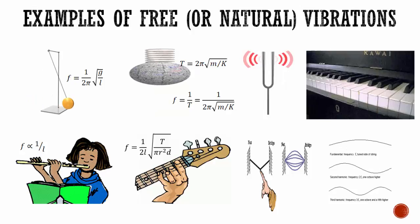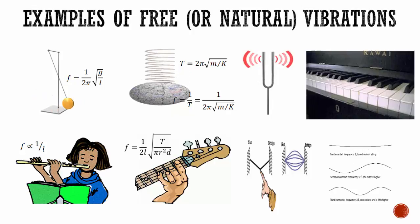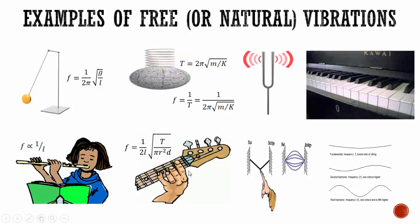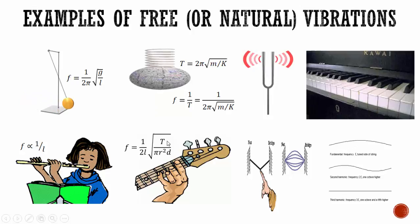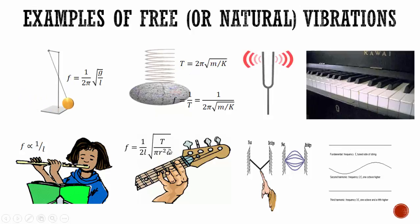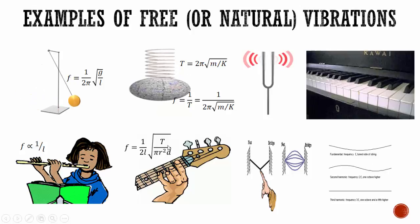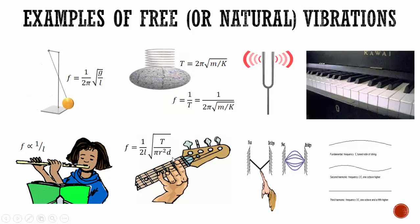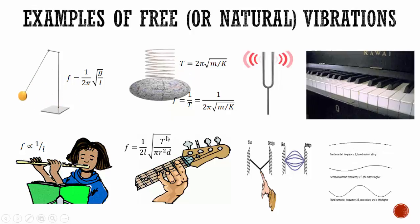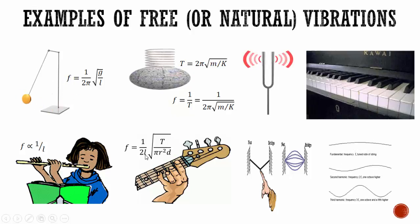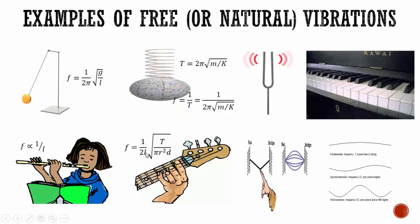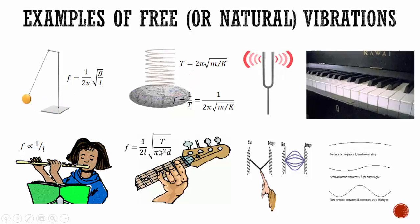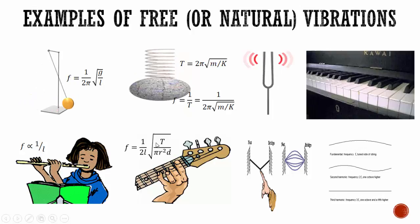When a string in instruments like sitar, guitar, or violin is plucked, transverse vibrations of a definite natural frequency are produced. The frequency formula is: f = (1/2L) √(T / πr²d), where T is the tension in the string, L is the length, r is the radius, and d is the density of the string. Density cannot be changed, but tension, length, and radius can be adjusted. Frequency increases when length decreases, radius decreases, or tension increases.